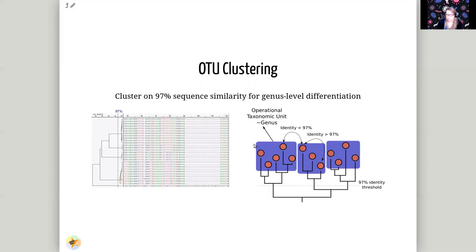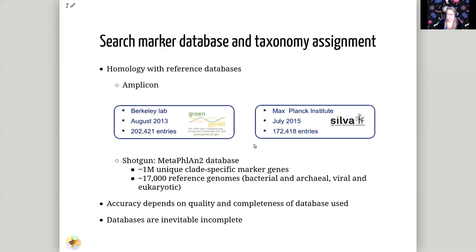We take the sequences from each of these clusters and try to assign a taxonomy using reference databases. Amplicon sequencing is very well established, so these reference databases are very mature. The two main ones are Silva and GreenGenes — Silva is a little more updated nowadays, so we'll be using that in the tutorial. For shotgun sequencing, there is the MetaPhlAn database, which has a very large number of marker genes to aid in identification. The choice of which database you use can affect what you find, because you only find what you look for — and these databases are invariably incomplete, so just be aware of that.